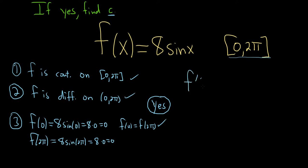So f prime of x. Now you could call it c if you wanted to. You could write f prime of c, but I'll just use x. The derivative of sine is cosine. So this will just be 8 cosine x. And then we set this equal to 0.